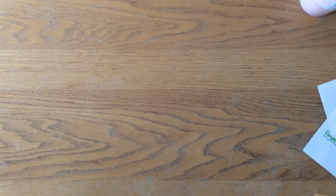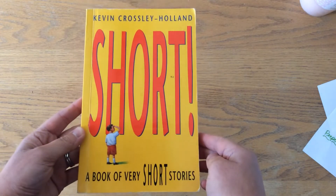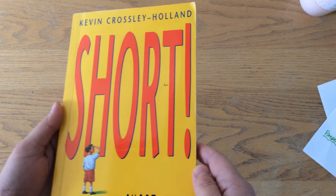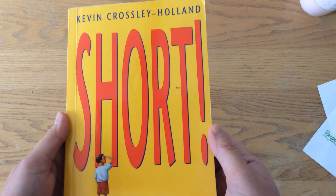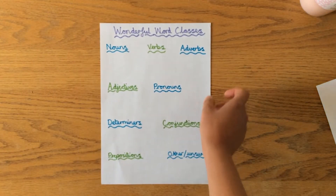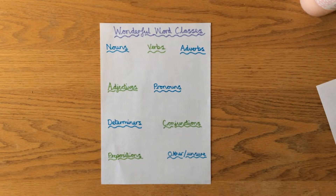I thought I would still do my video for you for this week's curriculum board. I would like you this week to first of all select a book — I have chosen this one, which is just a book of short stories; you can pick any book you want. We're going to do a grammar exercise where we have a look and find what the different word classes are. Here's my list — the wonderful word classes: nouns, verbs, adverbs, adjectives, pronouns, determiners, conjunctions, prepositions, and then any other that you're not sure about.